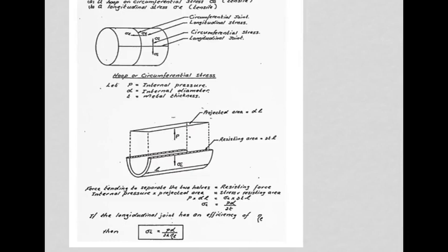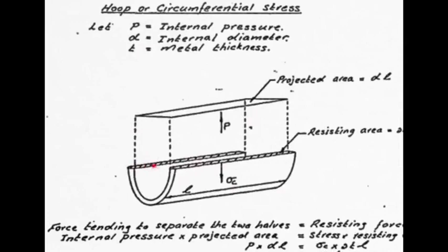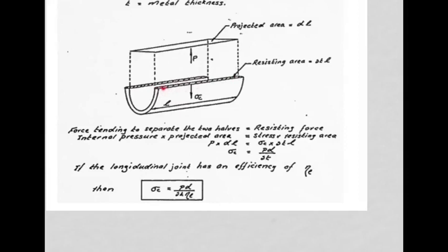The resisting force equals stress times area, which is the stress multiplied by 2tl — t being the thickness of the material times l for the length, giving the shaded area on each side, and there are two of them resisting the force. If we consider it as an imaginary joint, the stress is simply pd over 2t. However, if there is a real welded seam with a joint efficiency, we must factor the stress accordingly.